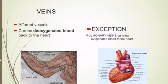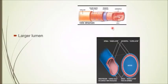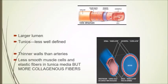Veins are afferent vessels carrying deoxygenated blood, except the pulmonary veins. They have a larger lumen compared to arteries and contain valves because the flow of blood is against gravitational force, requiring valves to allow blood flow toward the heart. All three tunics — tunica intima, media, and adventitia — are present but are less well-defined compared to an artery, with thinner walls and less smooth muscle cells.